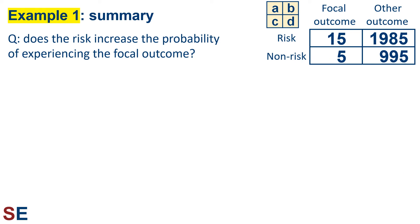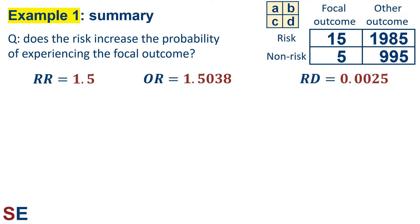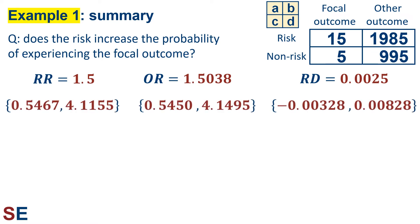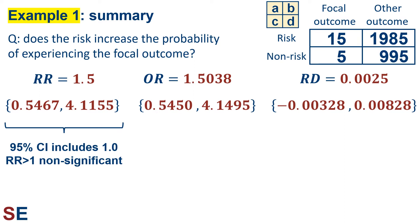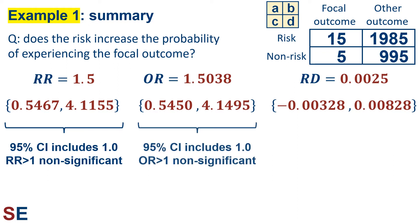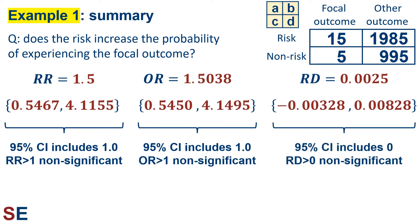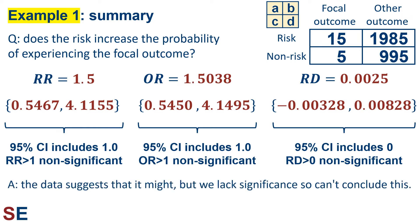Let's take another look at what our values and confidence intervals tell us. We have an overall question: does the risk increase the probability of experiencing the focal outcome? Our sample data gives us relative risk, odds ratio, and risk difference values that make it look like the risk does increase the probability. However, all three 95% confidence intervals include 1 or 0, indicating non-significant results. The data suggests the risk factor might increase the chances of the focal outcome, but we lack significance and cannot conclude this. The data values are within the range that random chance and sampling error could generate.